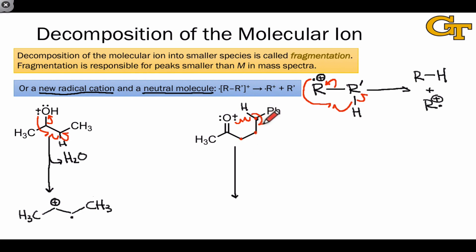A cascade of single electron flows results in the formation of an alkene, or carbon-carbon double bond here, and a new radical cation incorporating the alpha carbon, the carbonyl, and whatever else is in the molecule on the other side of the carbonyl group.